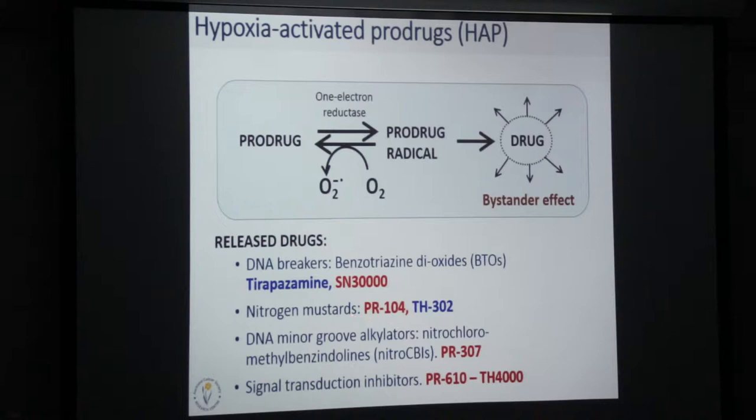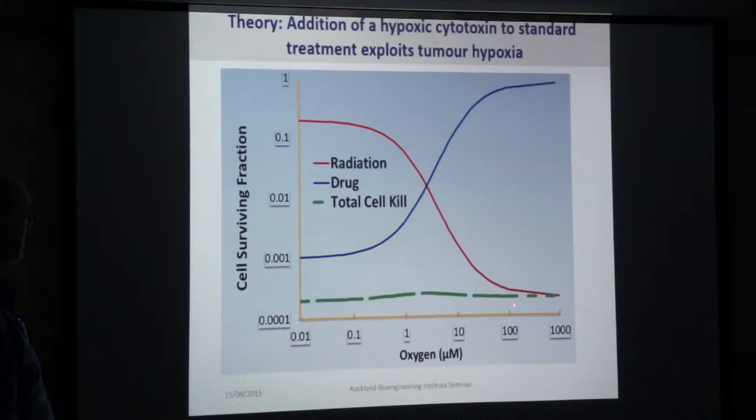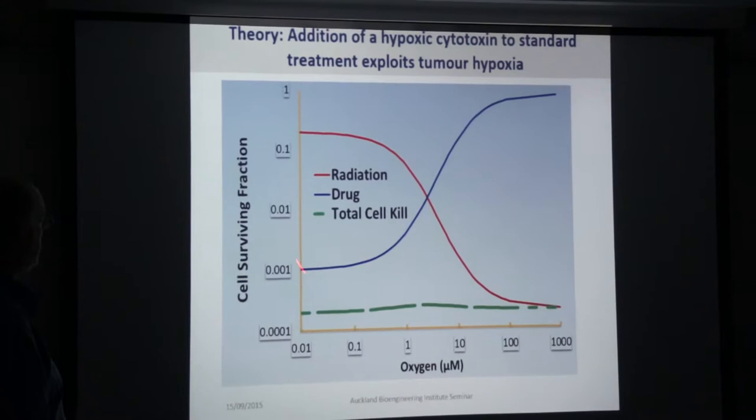The basic principle is that if you give these drugs around about the time of radiation you can complement radiation's activity. Radiation kills a lot of cells at high and intermediate oxygen concentrations, and the hypoxia-selective prodrug kills cells at low oxygen concentrations.